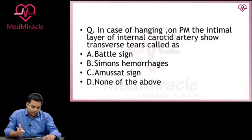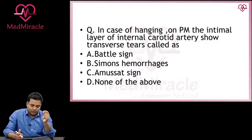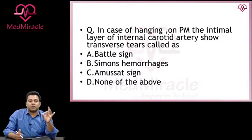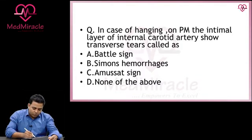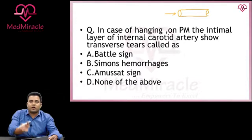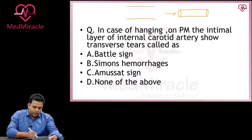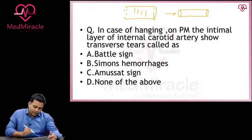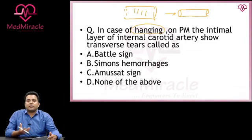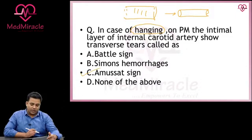This is an All India question: in case of hanging on postmortem, the intimal layer of the internal carotid artery shows transverse tears. To look for tears of the intimal layer, we take out the internal carotid from the body, cut along the wall of the artery to open the lumen, and if we find transverse tears of the intimal layer with cause of death being hanging, this is called Amusat sign.